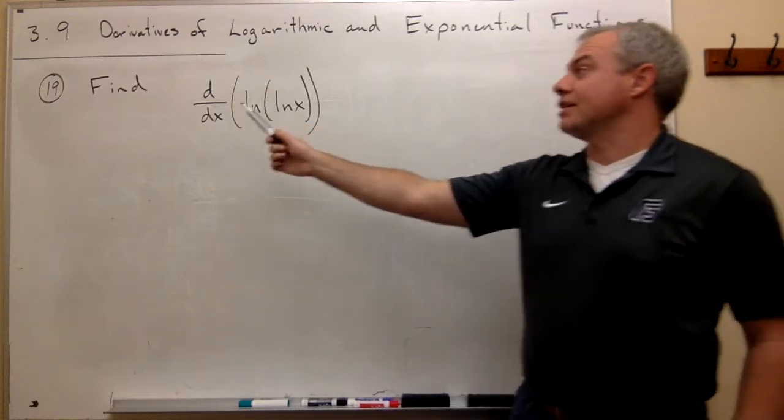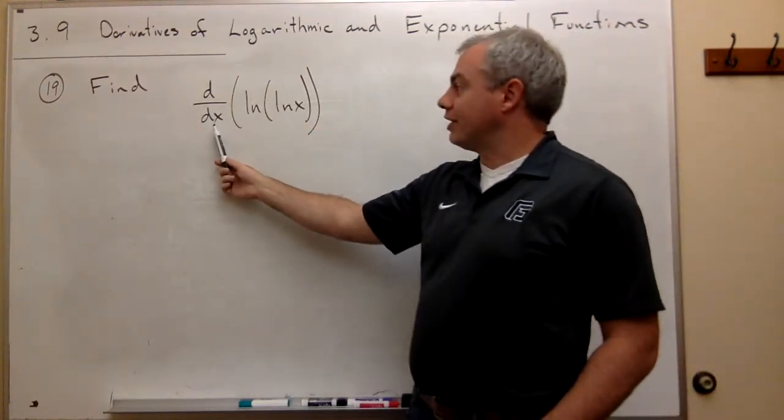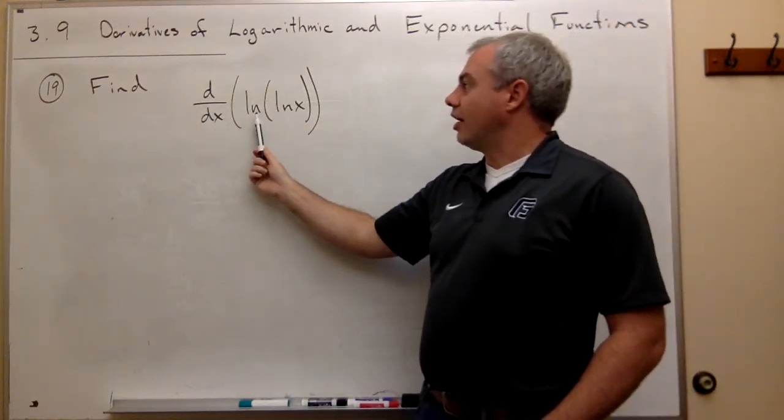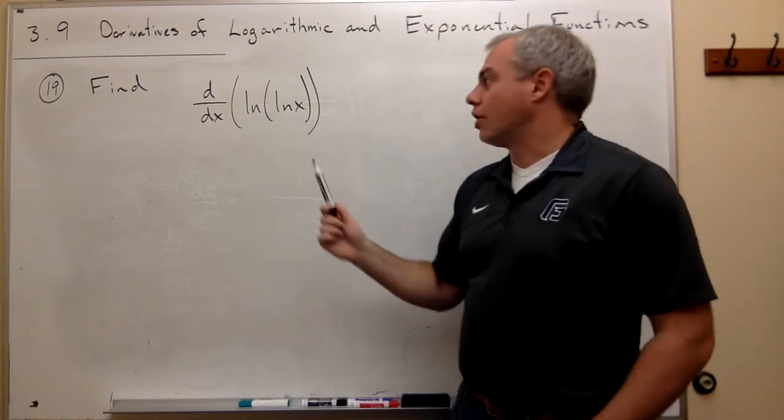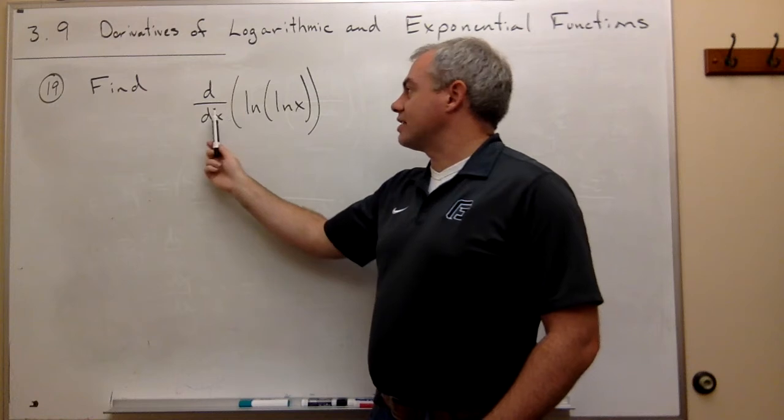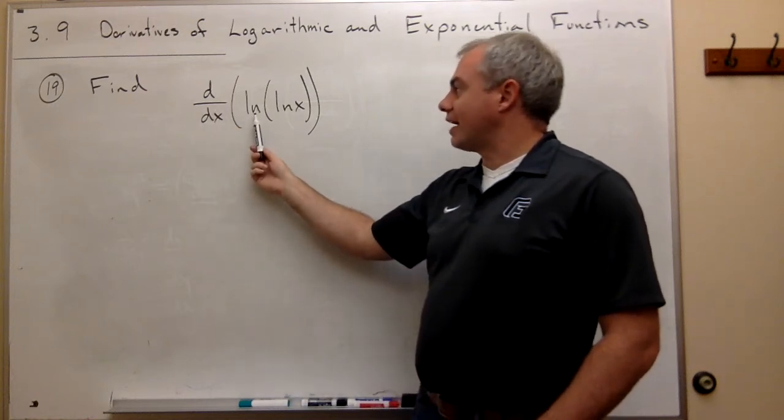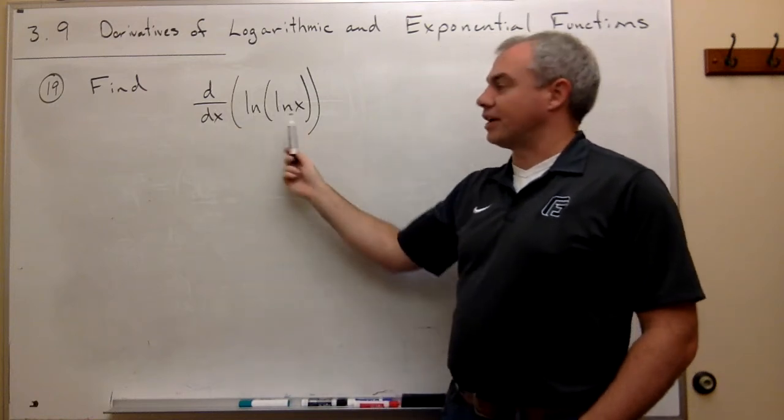In problem number 19, we want to find the derivative with respect to x of ln of ln of x. When I look at this, I see I'm taking the derivative of the natural log of something.